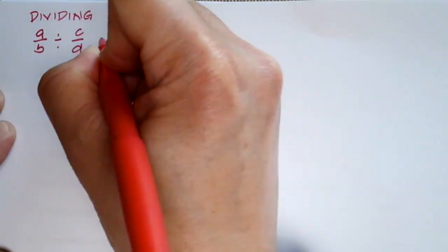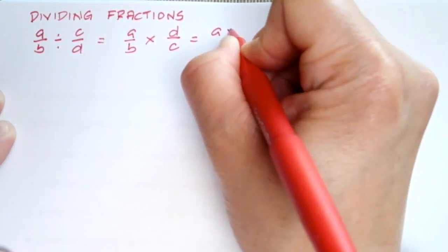In dividing two fractions, all we need to do is to copy the first fraction and take the reciprocal of the second fraction and proceed to multiplication.